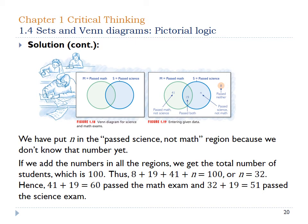You'll often hear information like 'we have 100 people and this many passed math or this many did that thing,' and sometimes it doesn't add up to 100. That's because there's overlap — some people could have done both. That's where the Venn diagram really comes into play. It helps you visualize that information.